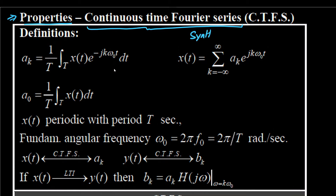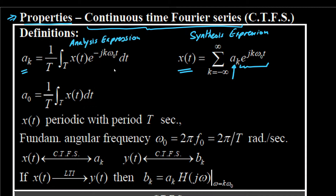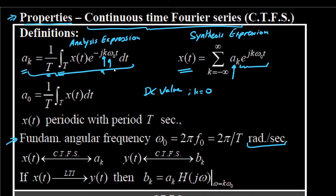We have the synthesis expression for the complex exponential Fourier series. Any periodic signal x(t), provided it follows the Dirichlet conditions, can be broken down into a sum of complex exponentials. The weights or coefficients are ak, found by the analysis expression: ak = (1/T) integral over T of x(t) e^(-jkω₀t) dt, where k is the harmonic and ω₀ is the fundamental angular frequency in radians per second. For the DC value we set k=0, giving a₀ as simply the average value of the signal.